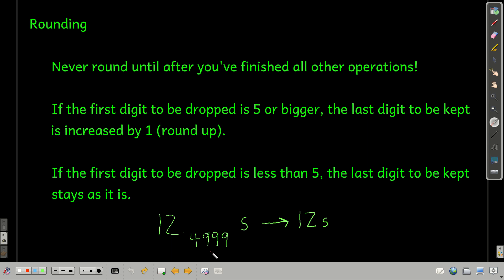Notice you don't do this recursively. Because this is a nine, you don't round it to a five and then round it to a three. You just look at the first digit you're dropping. If it's less than five, keep the last digit you're keeping the same. If it's five or bigger, round up.